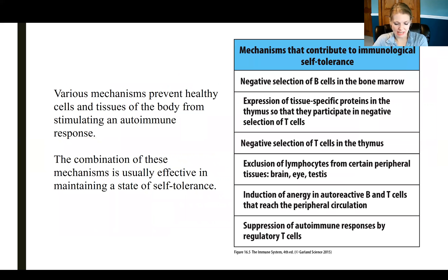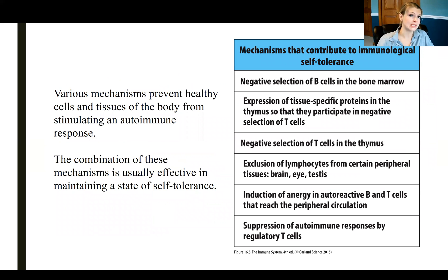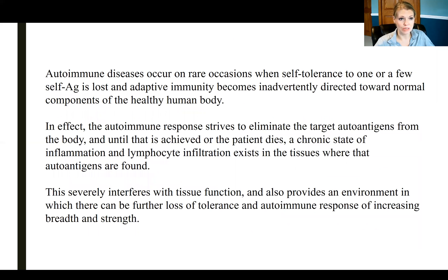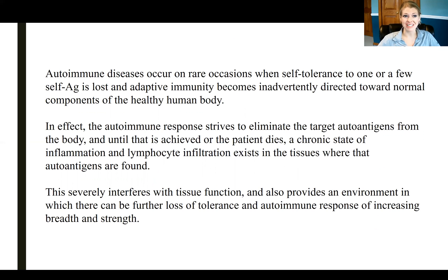Various mechanisms are in place to prevent autoimmune diseases — the checkpoints during B cell and T cell development that we discussed, where self-reactive T and B cells are negatively selected against. These mechanisms do a pretty good job maintaining self-tolerance; it's only when that tolerance is lost that we get autoimmune disease. These diseases occur on relatively rare occasions, and that loss of self-tolerance can be to a single self-antigen or to a variety of antigens that are systemic.